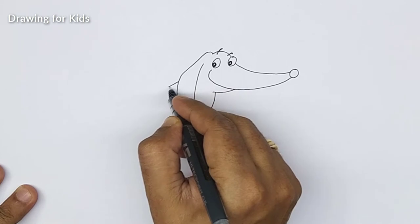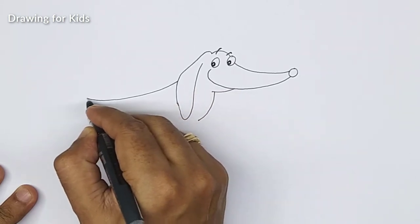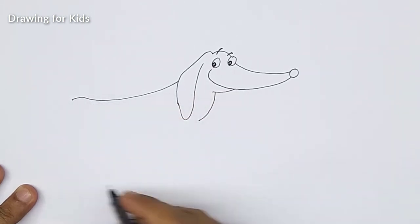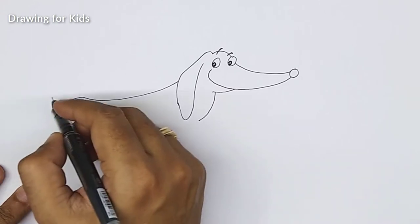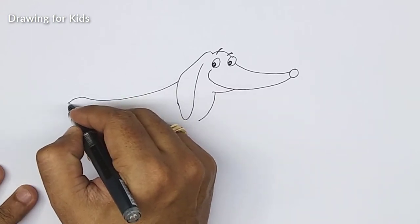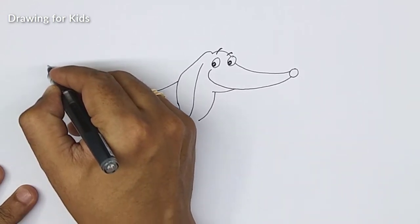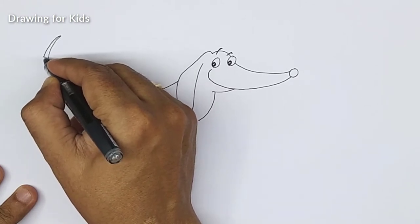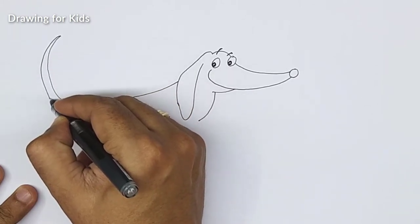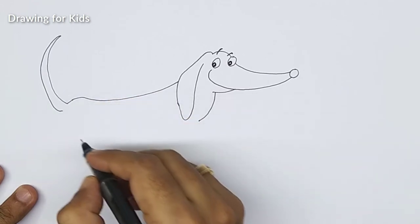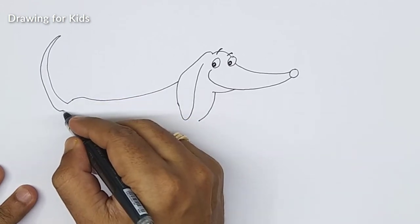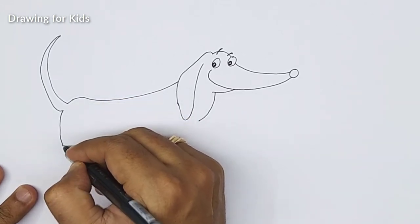Let's connect it properly. From here we'll take his body like this, and we'll make his pointy tail out. So let's do that.